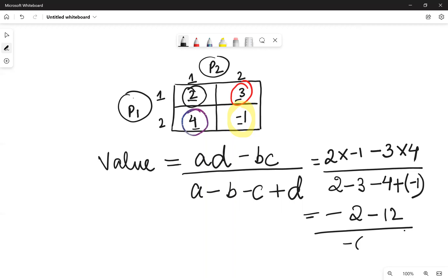That equals minus 14 over minus 6, which equals 14 by 6. We have removed the negative signs, which equals 7 by 3.